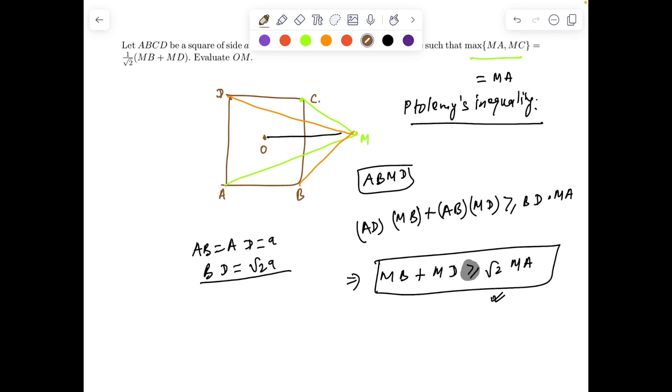There is a circle passing through A, B, M, D, and precisely that circle is nothing but the circle passing through A, B, C, D. So the point M now has to lie on the circle itself.